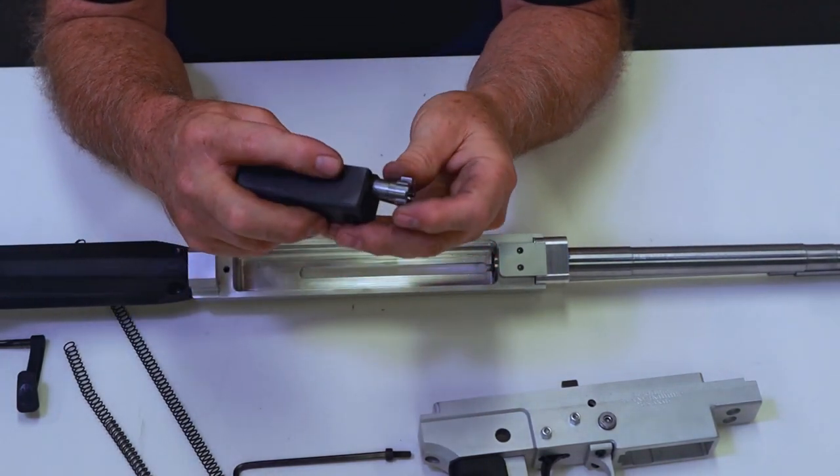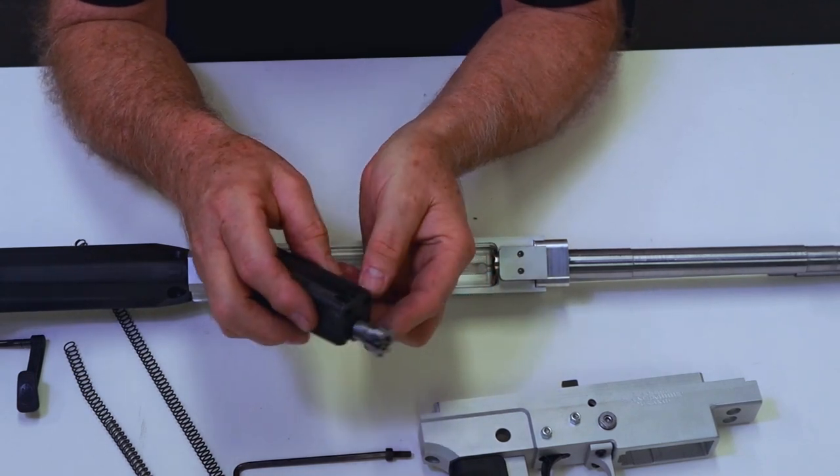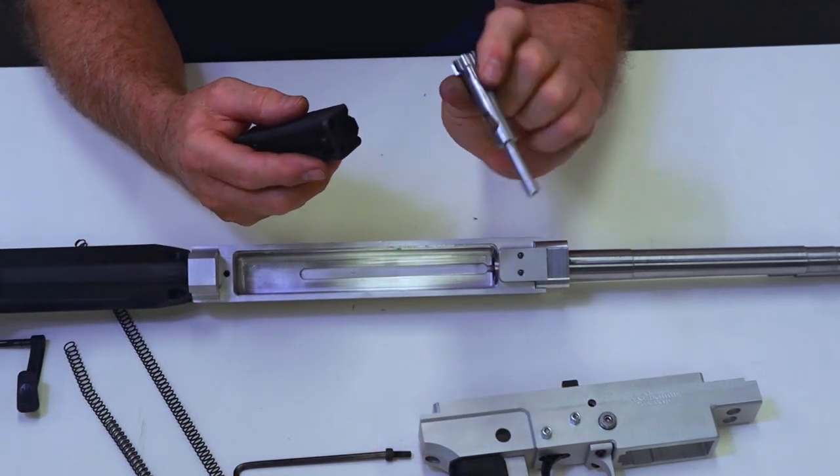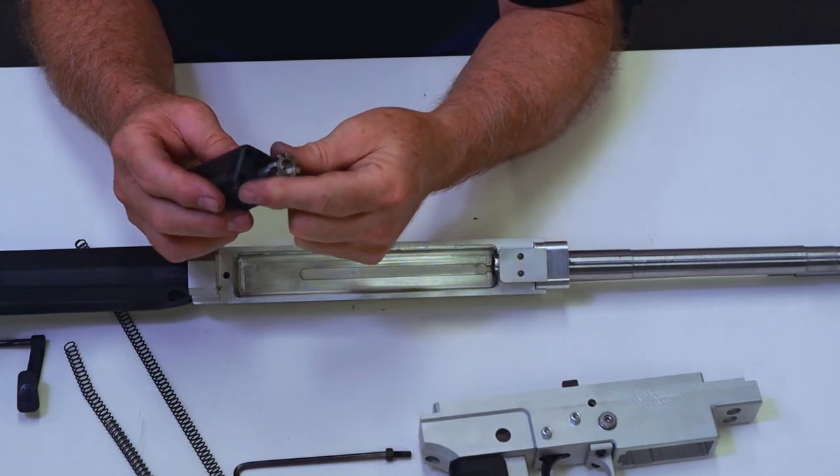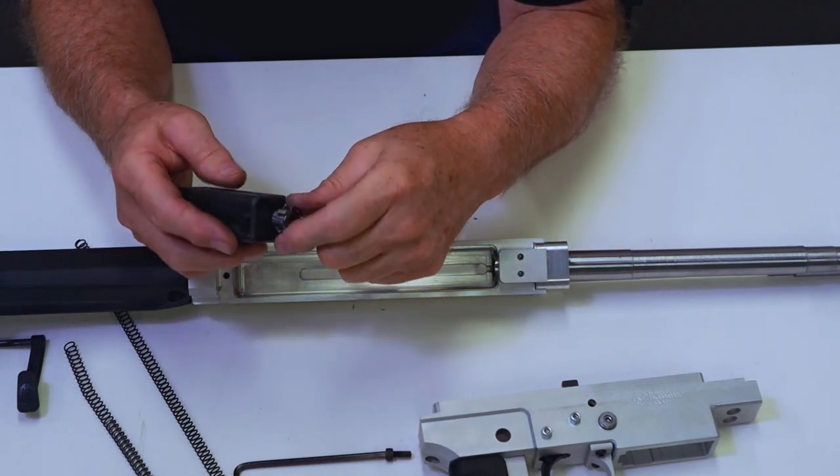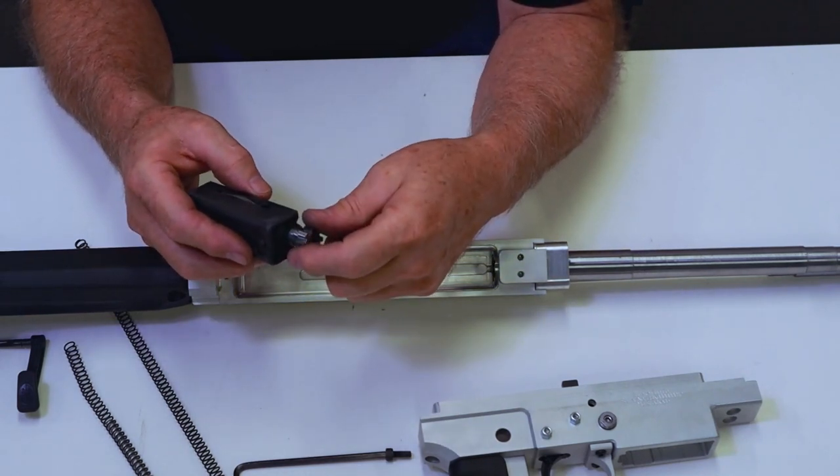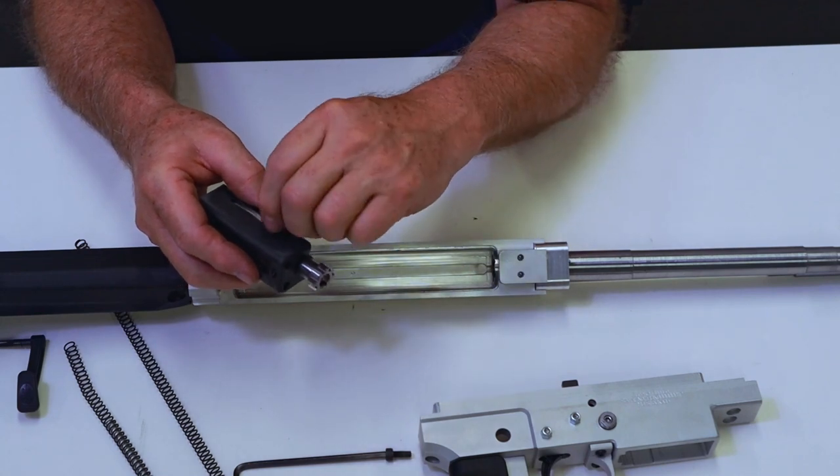The trick with this over other ones is the small travel. Typical extractor, as you've probably seen before, ejector pin in the front, the same as everything else, basically, in the world.